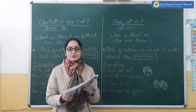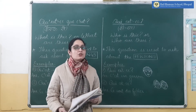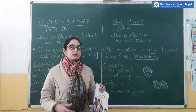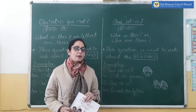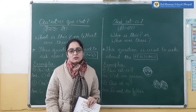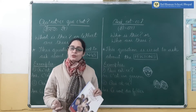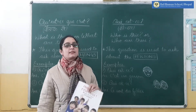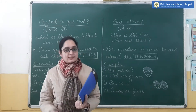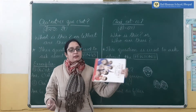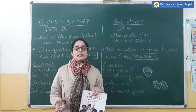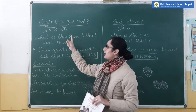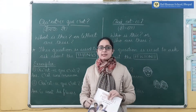Whenever we are asking the question 'what is this', the answer will always start from 'this'. Or if there are many things, if we are talking about many things — 'what are these?' — the answer will be 'these are flowers', 'these are books', 'these are pencils'. So these two questions are different in English, but in French we use the same question, that is 'keskse'.